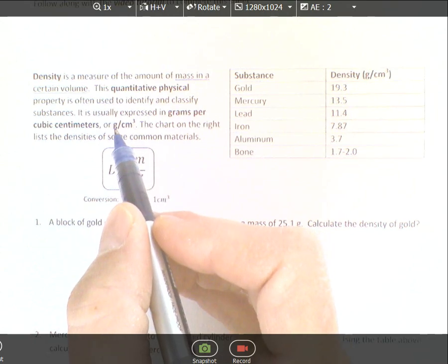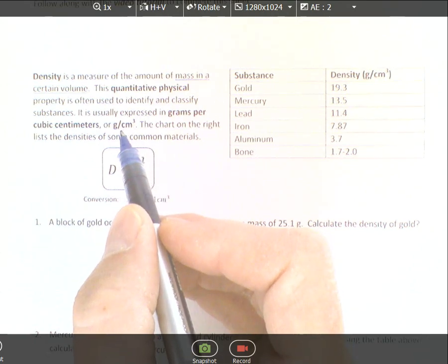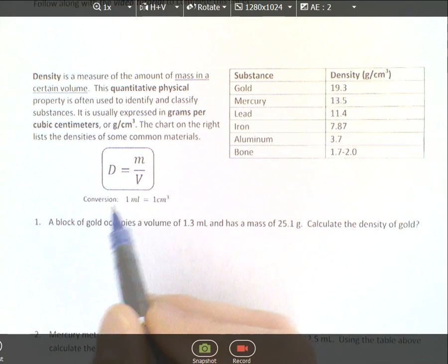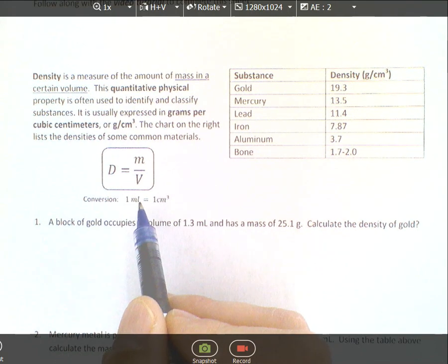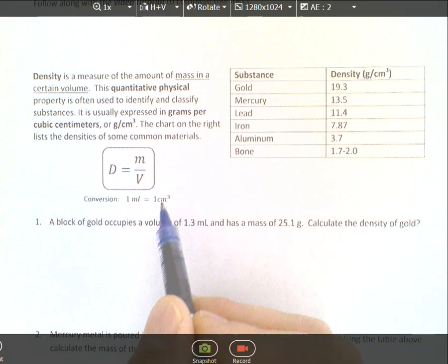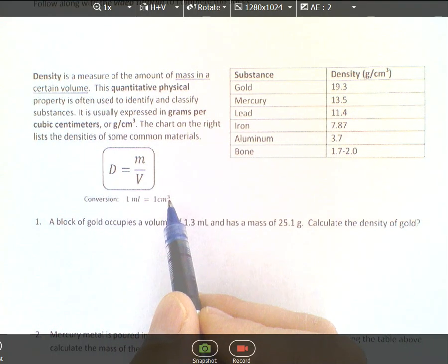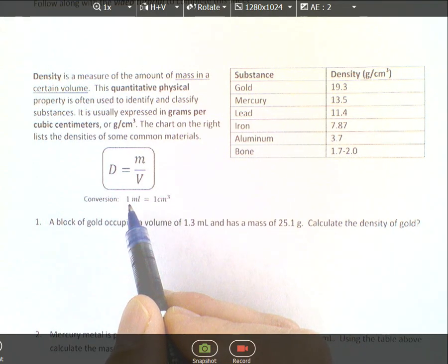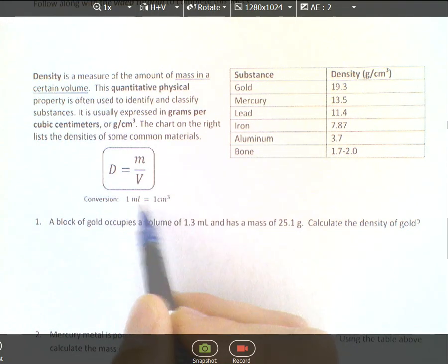Density is usually expressed in grams per cubic centimeter or grams per milliliter. There's a simple conversion you should know: one milliliter of volume equals one cubic centimeter of volume. If you had a little cube one centimeter by one centimeter by one centimeter, that would be equivalent to one milliliter of volume.